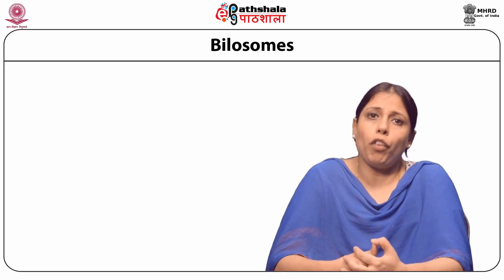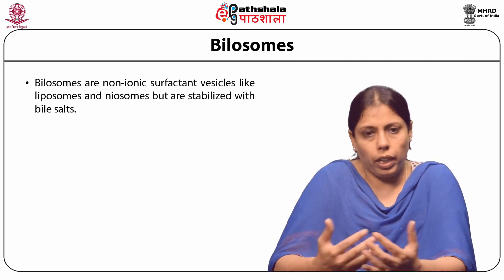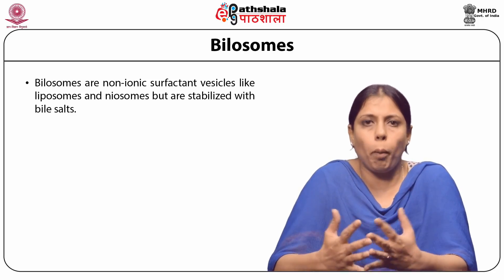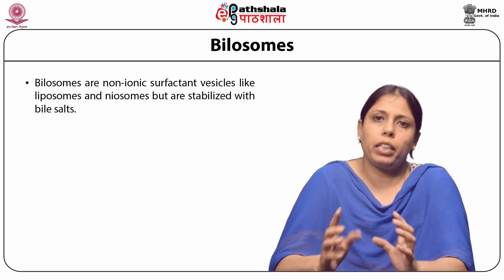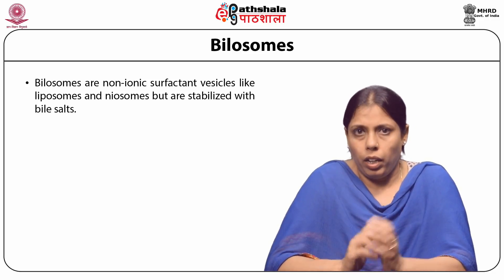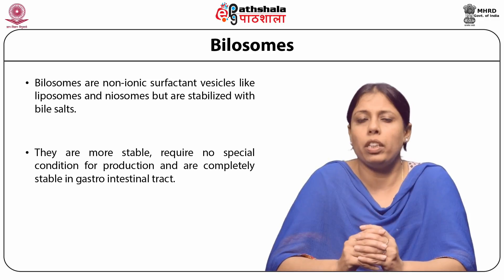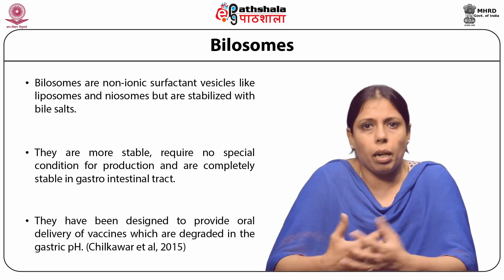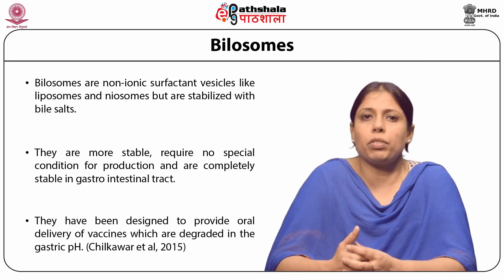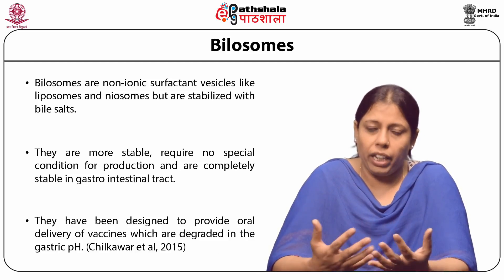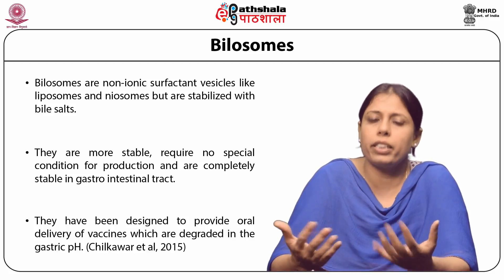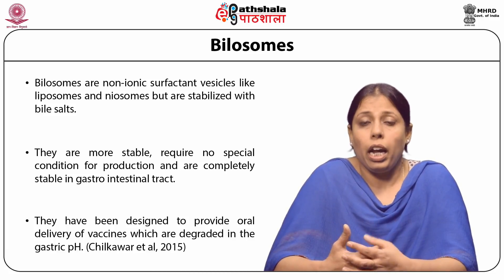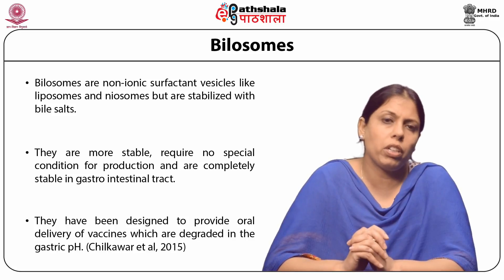Yet another modification of neosomes is bilosomes. These vesicle structures are almost similar to neosomes except that, apart from the surface active agent, bile salts like sodium deoxycholate are also incorporated. These bile salts give stability to the structure. Bilosomes have mostly been experimented for moieties which are degraded by stomach pH, especially vaccines to be delivered through the oral route. In this way, these bile salt containing neosomes are more stable, require no special conditions for production, and are completely stable in the gastrointestinal tract.